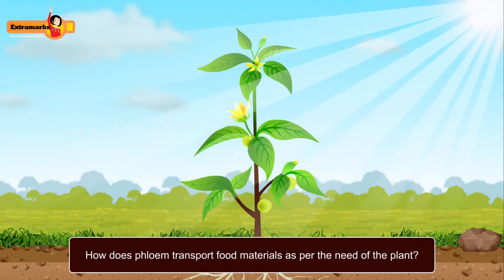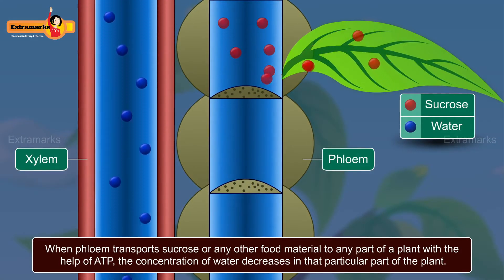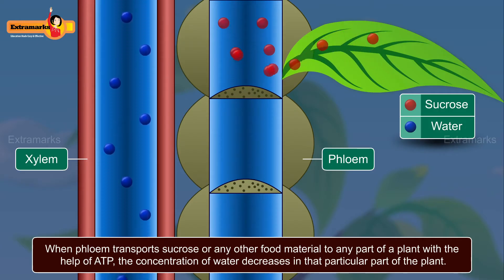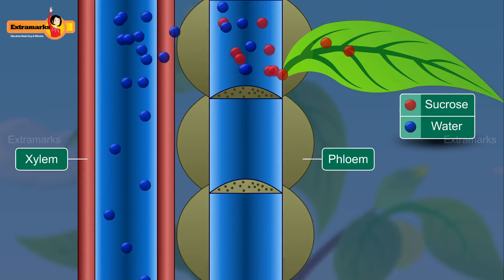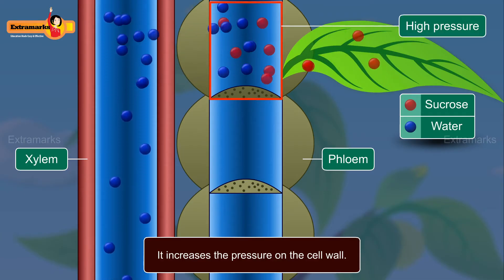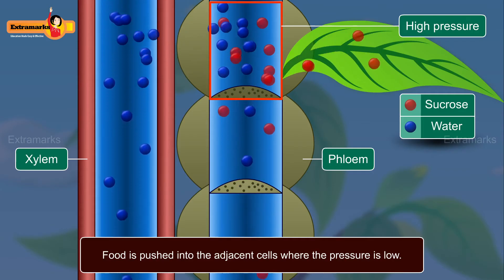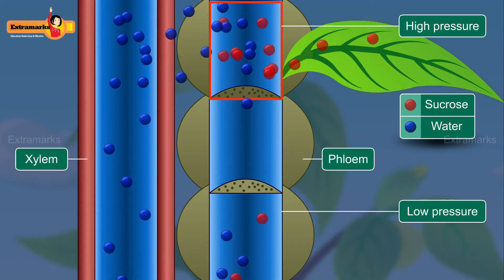Let us now understand how phloem transports food materials as per the needs of the plant. When phloem transports sucrose or any other food material to any part of a plant with the help of ATP, the concentration of water decreases in that particular part. Water then enters the cells of that part through diffusion, which increases the pressure on the cell wall. Due to this increase in pressure, food is pushed into adjacent cells where the pressure is low. Thus, phloem transports food throughout the plant.